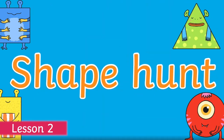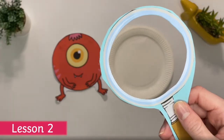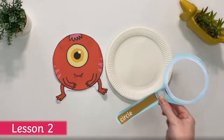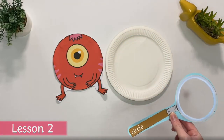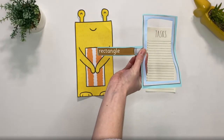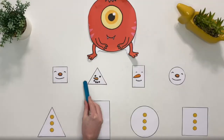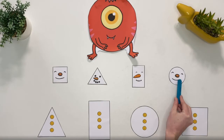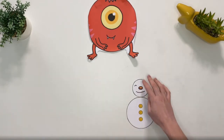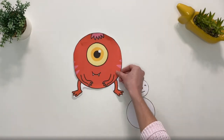Lesson two begins by consolidating previous learning with a find-a-shape hunt. Then children can help the shape aliens make their own shape snowmen. Once they've done this, children can strengthen their fine motor skills and create a shape snowman from play-doh.